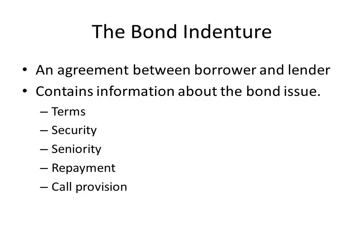The bond indenture is simply an agreement between the borrower and the lender, where each lays out their duties and promises to each other. It contains information about the bond issue, including the terms, security, seniority, repayment provisions, and call provision of the bond.